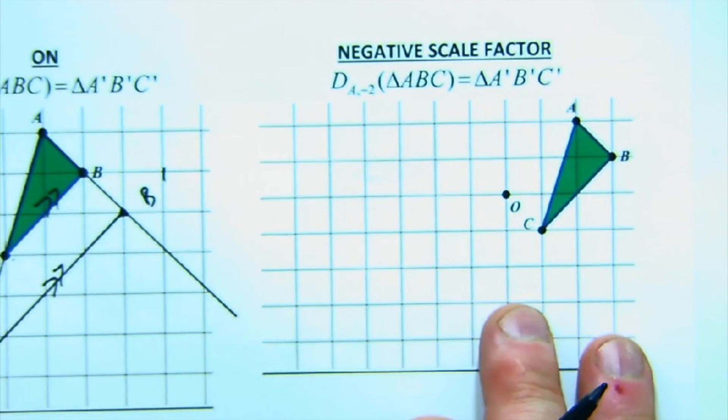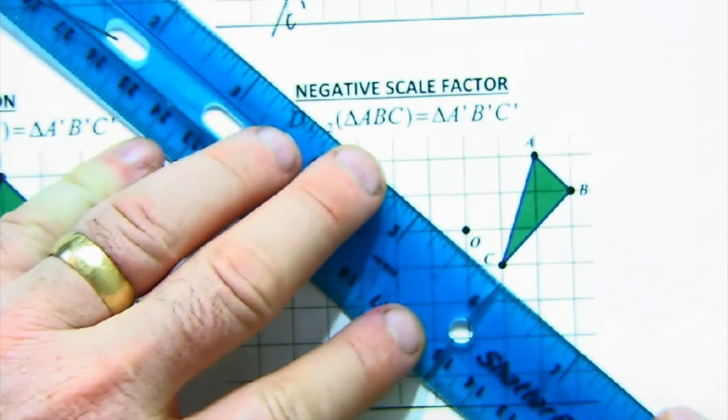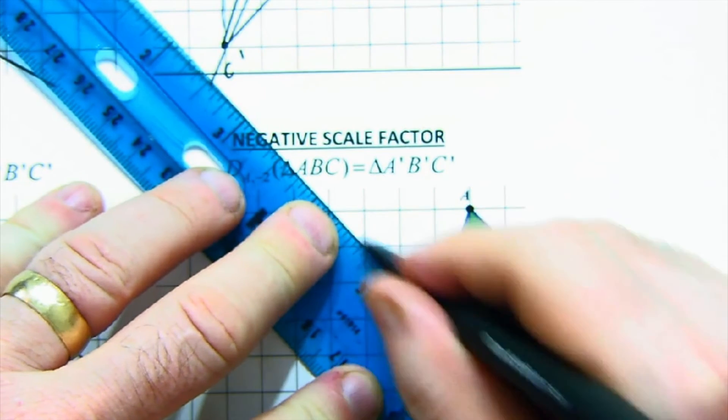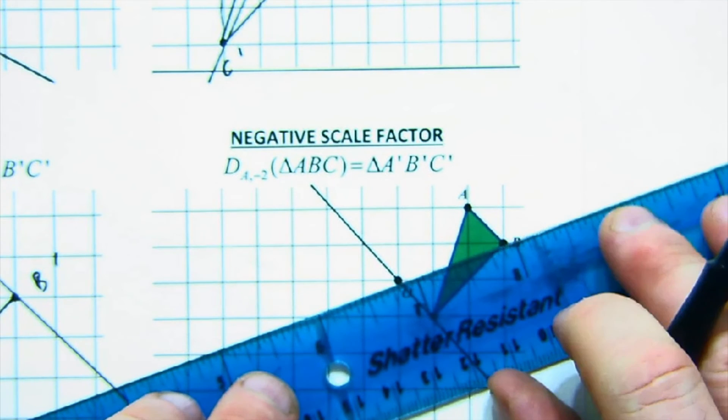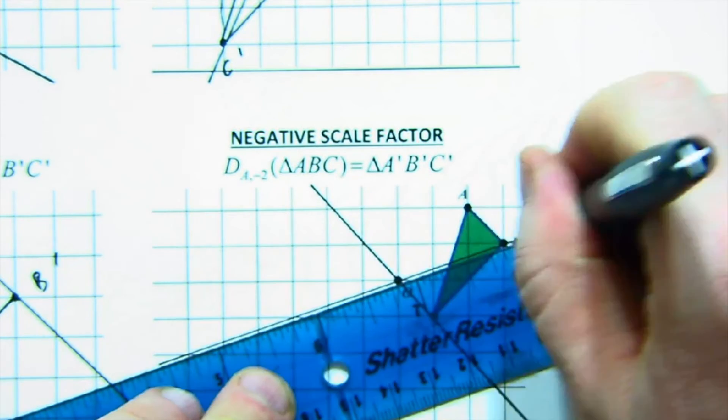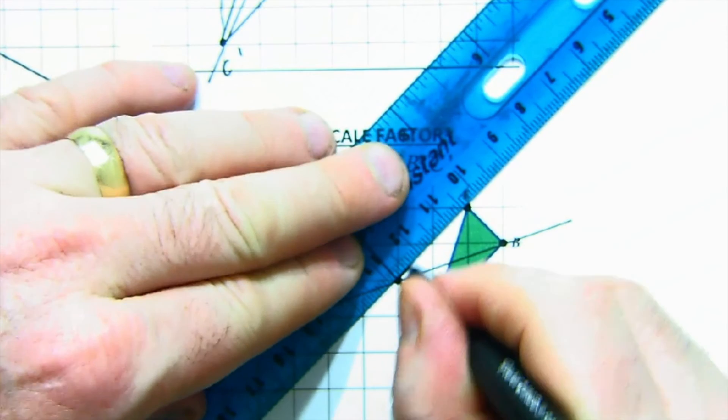A negative scale factor means that you, instead of going down the ray in the positive direction, the direction it's going, you're going to go the opposite direction. That's what the negative here refers to. It doesn't mean smaller or bigger. Negative in this case just means opposite direction or opposite ray.